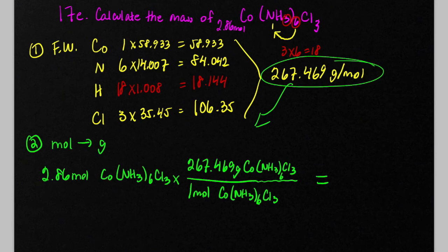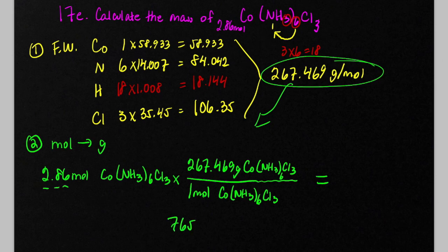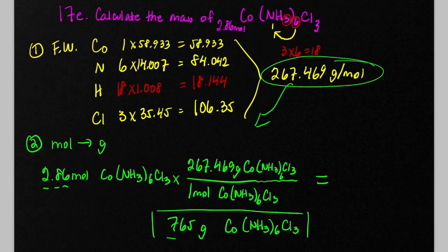On our calculators, we would just enter 2.86 times 267.469, and that gives me 764.96134. We want to round this off to 3 sig figs, so we're going to round it to 765 grams.